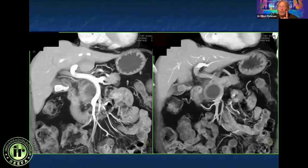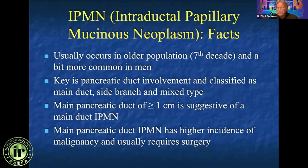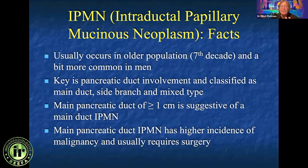So pseudocysts are always something to keep in your mind, and clinical history becomes very important. The most common lesion we typically see in practice are IPMNs — intraductal papillary mucinous neoplasms. They can either be side branch, main duct, or mixed type IPMNs. The main duct type is where the pancreatic duct is dilated. It used to be felt that anything above 1 cm was suggestive of a main duct IPMN and would require surgery because of a high degree of malignancy.